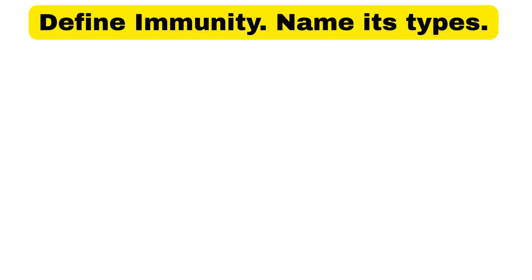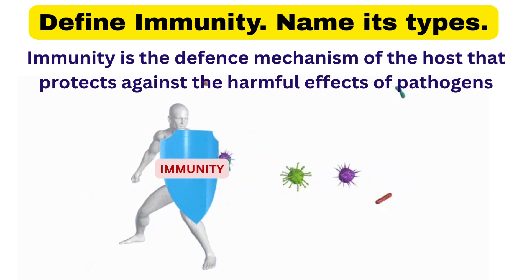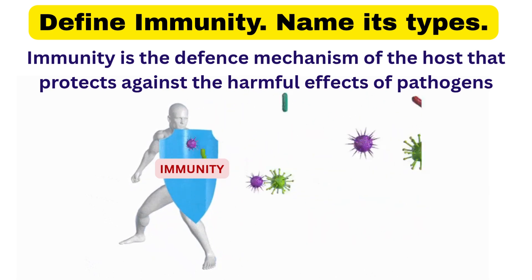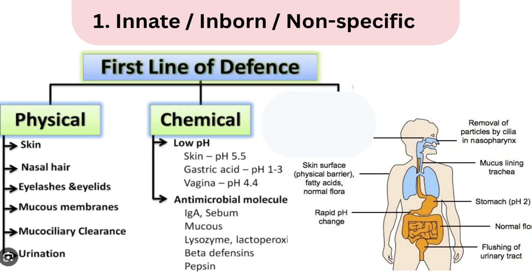Next question: define immunity and its types. Immunity is the defense mechanism of our body that protects us from the harmful effects of pathogens like bacteria, viruses, or foreign substances. The first type is innate immunity, which is non-specific and present since birth, acting as a first line of defense.